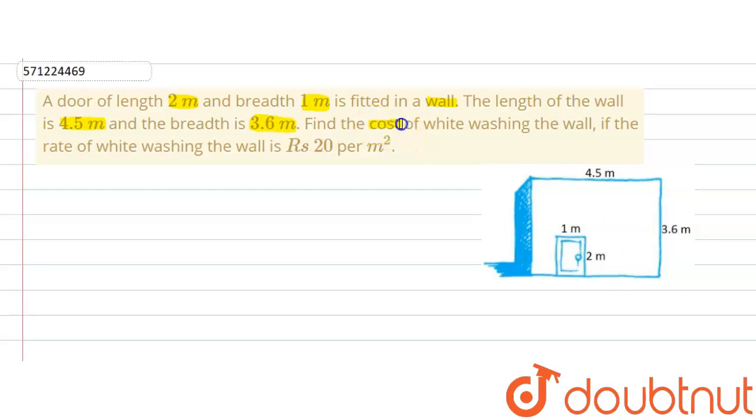Now we are asked to find out the cost of whitewashing the wall if the rate of whitewashing the wall is Rs 20 per meter square. So if 1 meter square of wall costs Rs 20 to whitewash, then how much total amount will it cost to whitewash the complete wall?